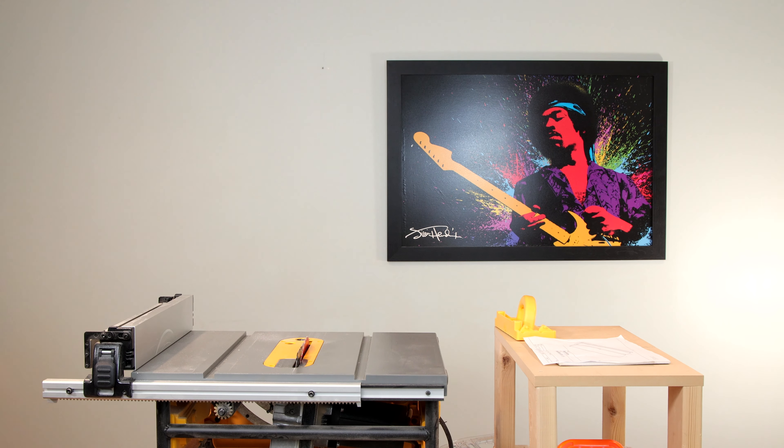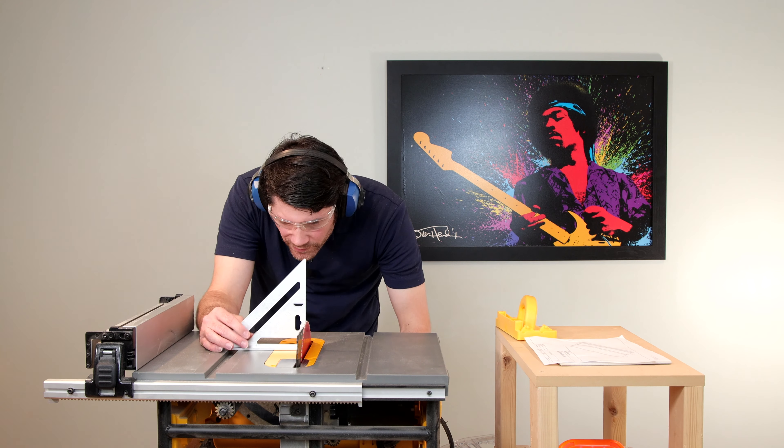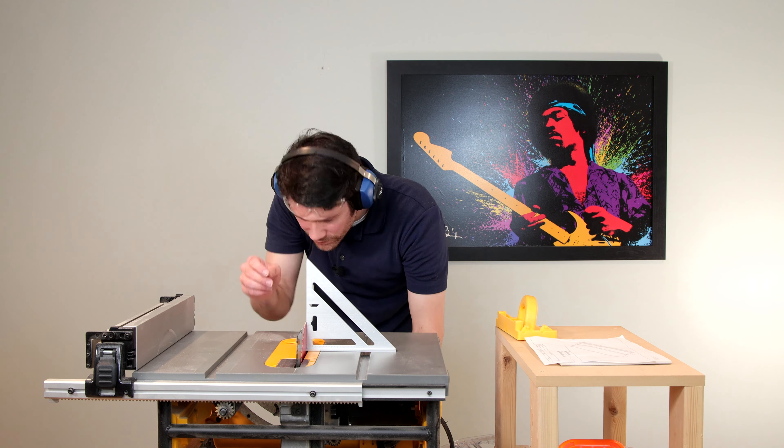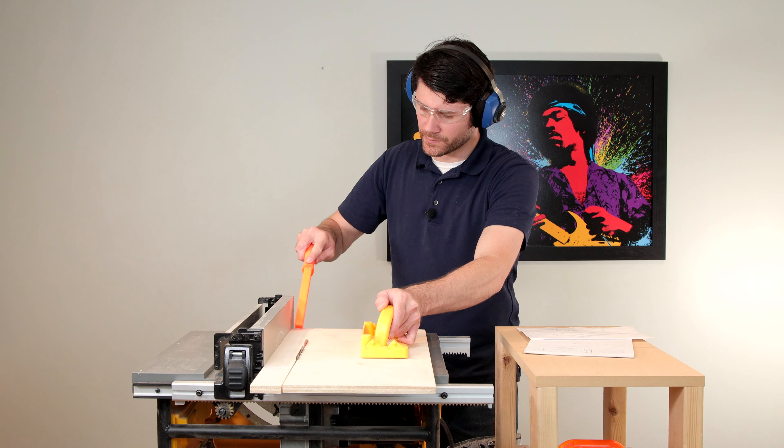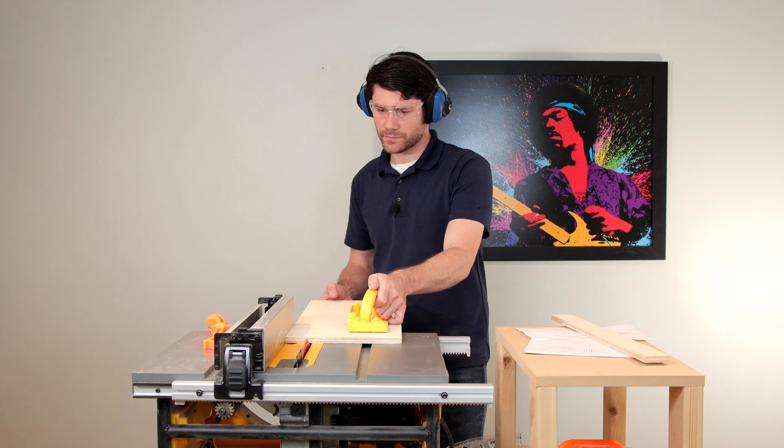The blade angle must now be readjusted to 90 degrees in relation to the table so that we can cut the three support legs for the pedal board. These will all be two inches in width.